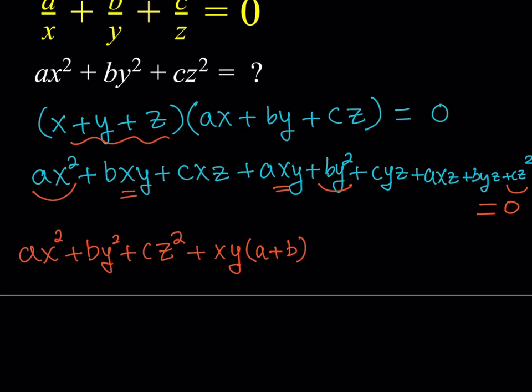So I can write it as xy times a plus b, right? And you're going to notice a pattern here. That should be familiar. And then, I can just go off of xz next. For example, xz, this one and this one. And if I pull out the xz here, then I should be getting a plus c, right? Which makes sense. Plus, and then finally, I have the cyz and the byz. If I pull out a yz here, it should give me b plus c. And this whole thing, again, is equal to zero.